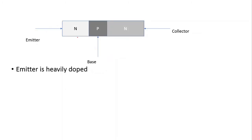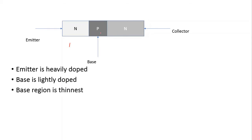In this NPN or PNP transistor, the emitter is heavily doped, while the base is lightly doped and the collector is moderately doped. The base region is the thinnest, followed by the emitter, and the collector region is the widest. Because the collector collects electrons, heat is produced in the collector region, so for better heat dissipation the collector region is made the widest.